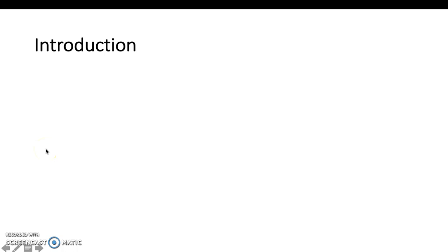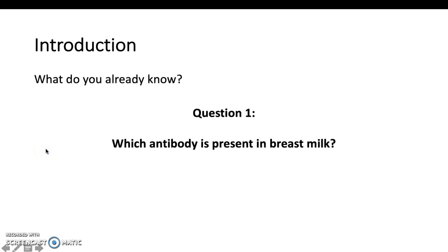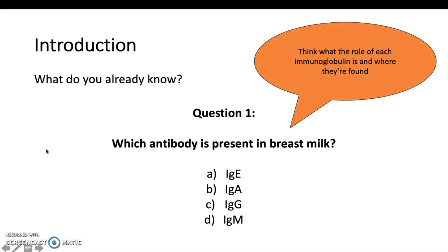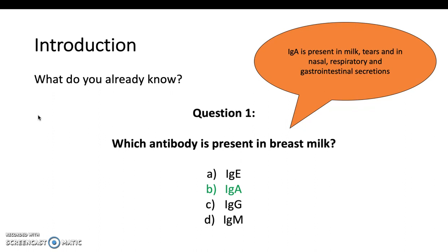First, a few questions. The first one is: which antibody is present in breast milk? Is it IgE, IgA, IgG, or IgM? Just refresh your memory about which one does what and have a little think. The answer is IgA. IgA is present in milk, tears, and nasal, respiratory, and gastrointestinal secretions.